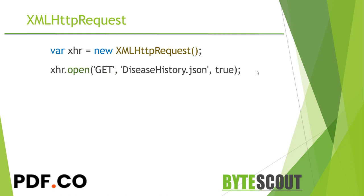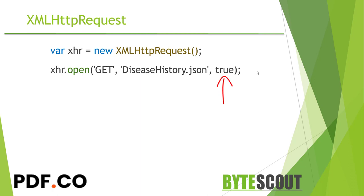Next, we need to prepare the parameters for the operation using the open method of XMLHttpRequest. This method has three parameters: first, the method for retrieving the information — we will use GET here; then, the path where our JSON file resides; and a boolean indicating whether to execute the request asynchronously, which should be true in our case.